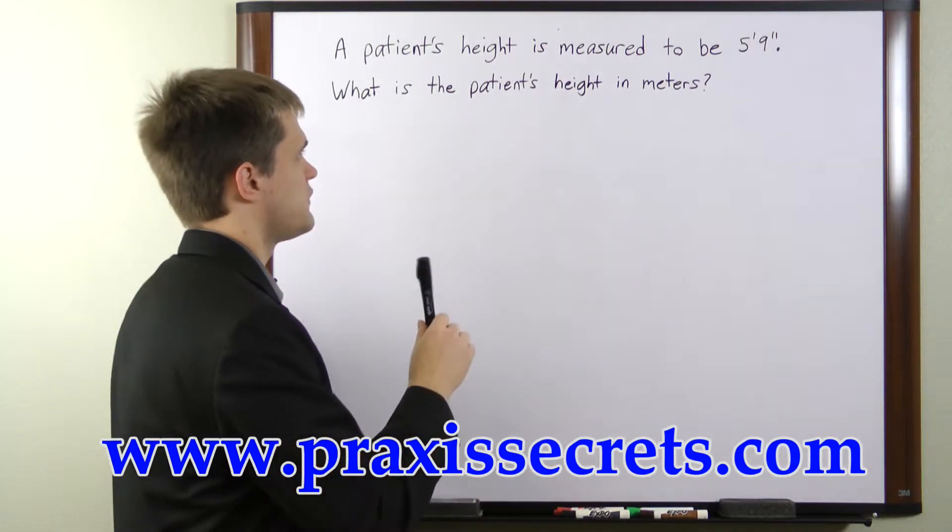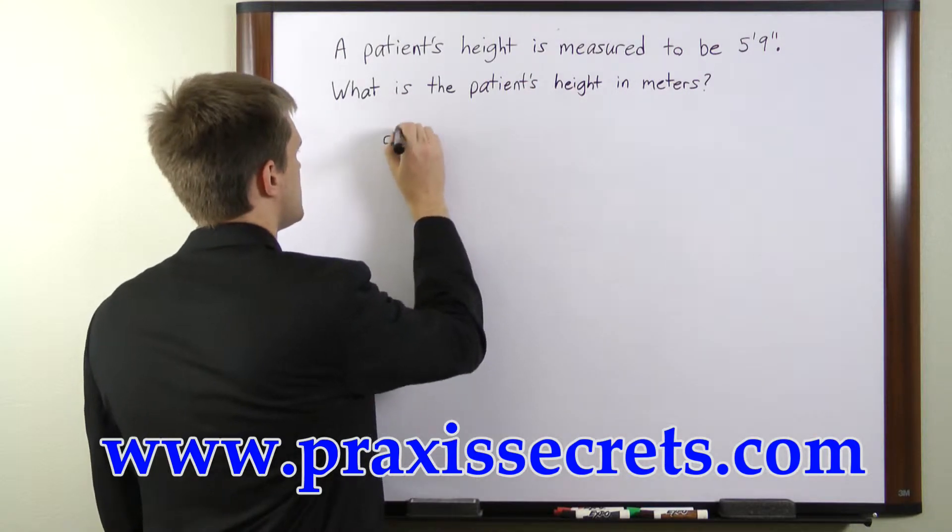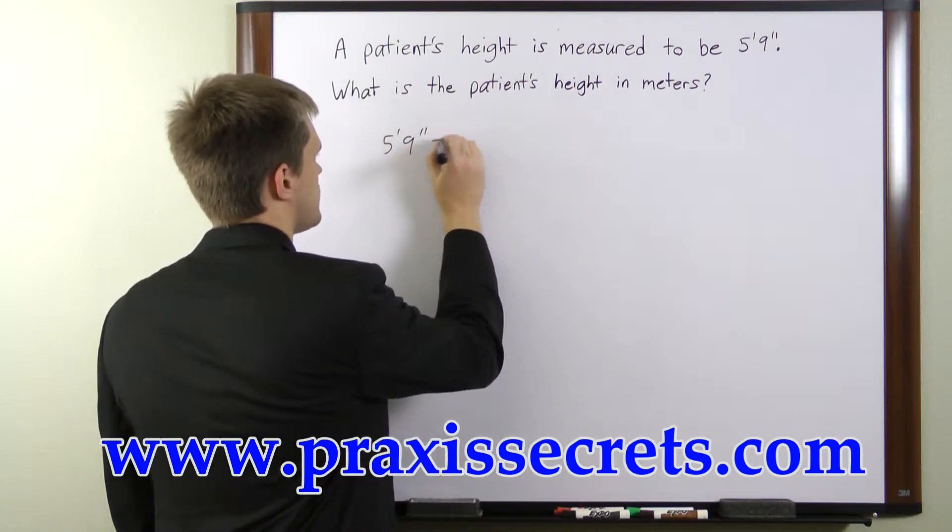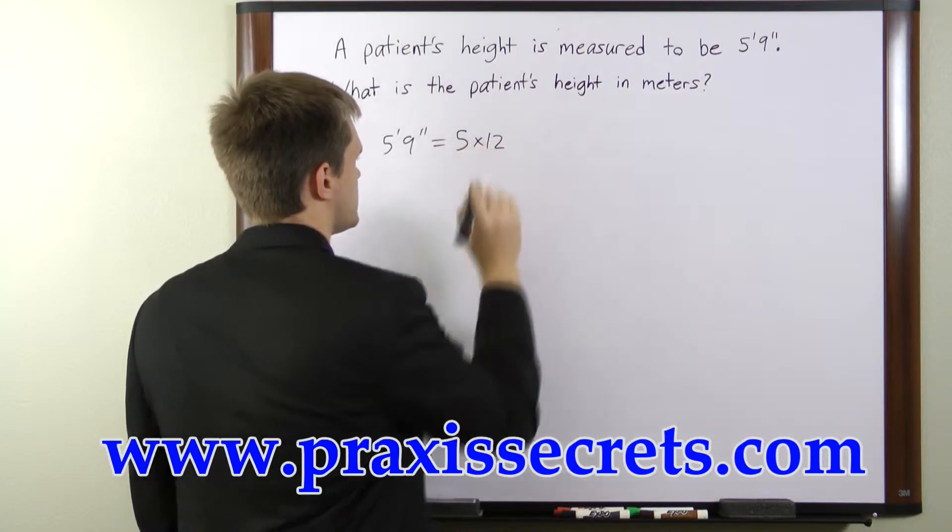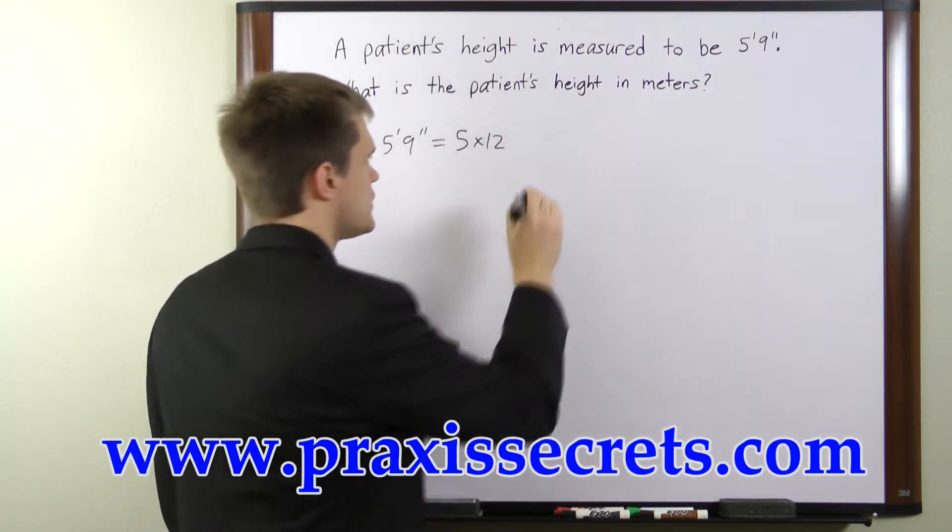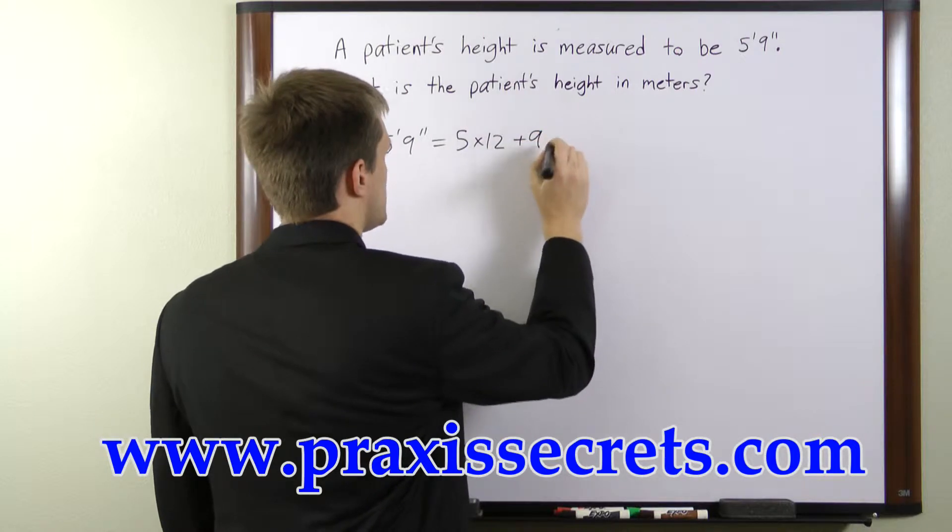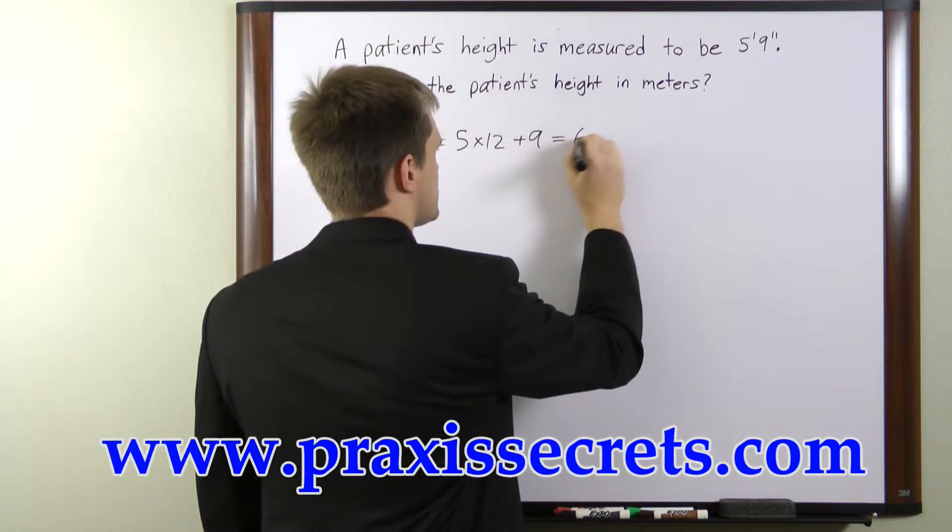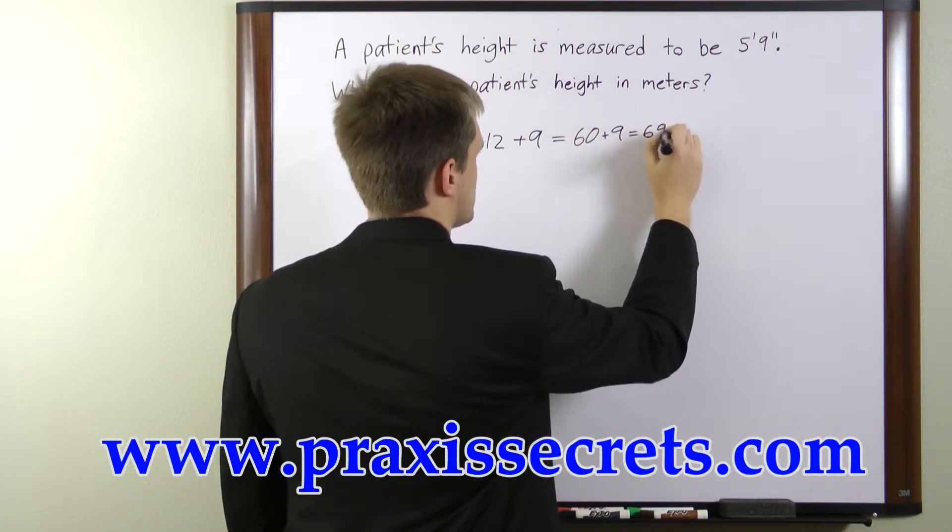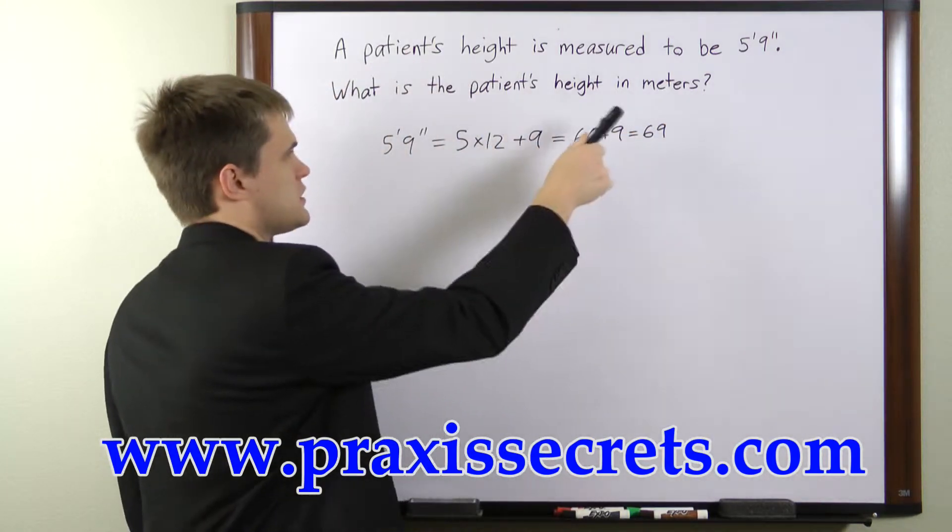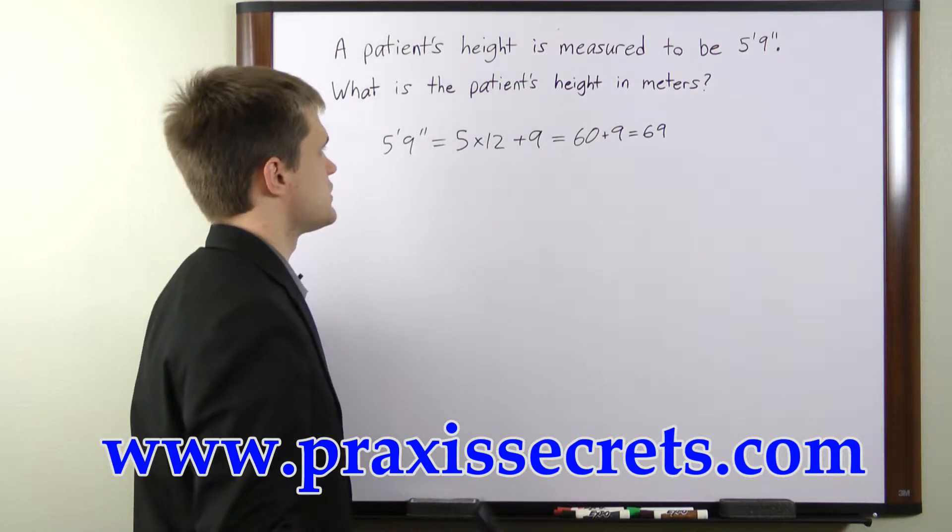So first we're going to take 5 feet and 9 inches and that is equivalent to 5 times 12 because there are 12 inches per foot plus 9 and that will give us 5 times 12 is 60 and 60 plus 9 is 69. So the patient is 69 inches in height.